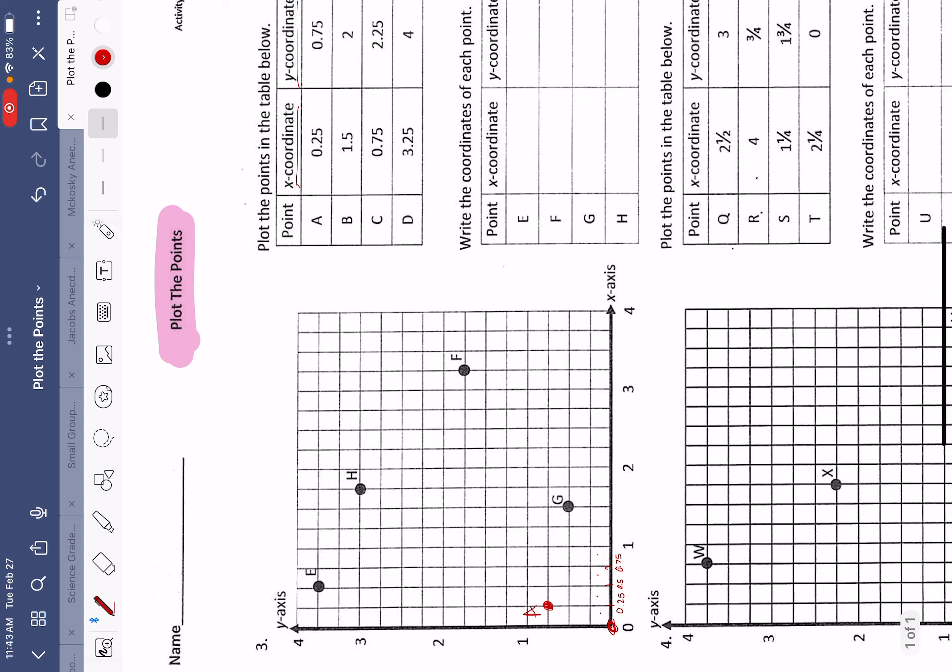Let's do point B. Point B is at x-coordinate of 1 and 5 tenths. So I am going to start at my origin, and I'm going to go over 1 and 5 tenths. And my y-coordinate is going to be 2. So I'm going to travel all the way up to about 2. My point should be right about there. And that is going to be point B. This is so far so good.